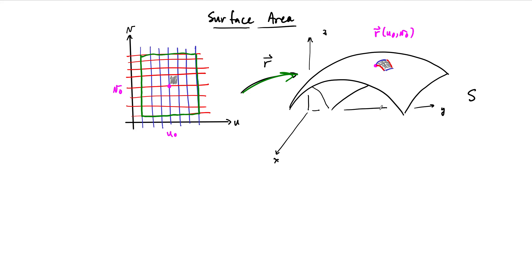We want to try to compute the surface area, and the idea is that we want to approximate the surface area by using the tangent vectors to the edges we just drew. I'll do these in green and kind of an orange color. We can then build a parallelogram which does not live on the surface itself — it's tangent to the surface. So, this is a tiny piece of the tangent plane. I'll shade this in yellow, and we want to try to compute the area of this tiny piece of the tangent plane.